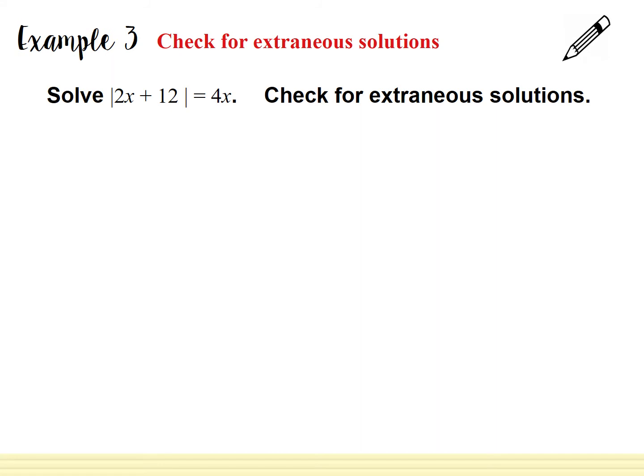Example 3 wants us to check for extraneous solutions. Our equation is the absolute value of 2x plus 12 is equal to 4x. Extraneous solutions are extra solutions that may not actually work. We're going to get two solutions just like before, and then check by plugging back in to make sure the statement holds true. In this problem, the absolute value is already isolated by itself on the left side.